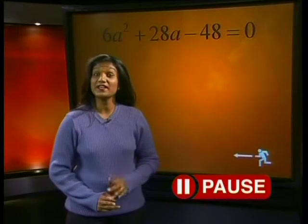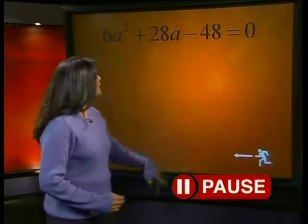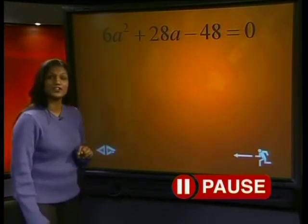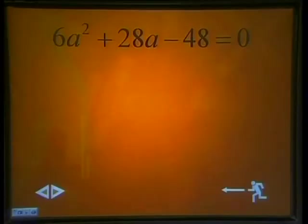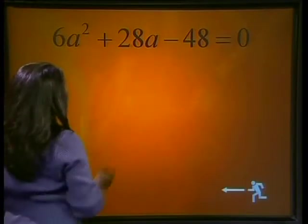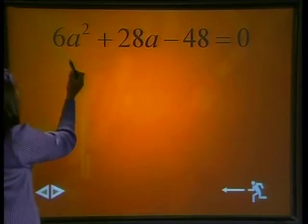Perhaps I'd better give you an example to do for yourselves. Here is one. Solve for a if 6a² + 28a - 48 = 0. Now write it down and see if you can do it as we do it. We first need to identify a common factor out of all three terms. Then we divide through by the common factor.